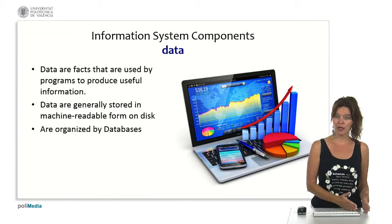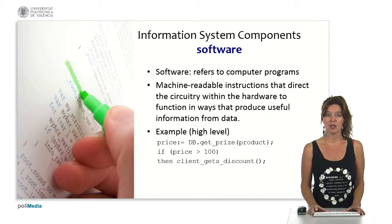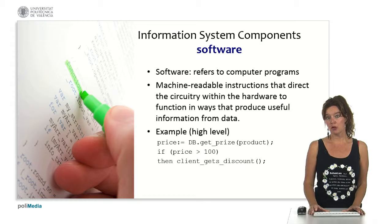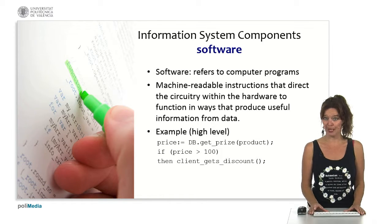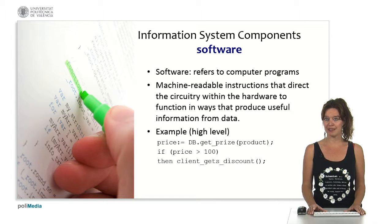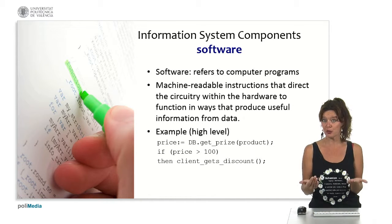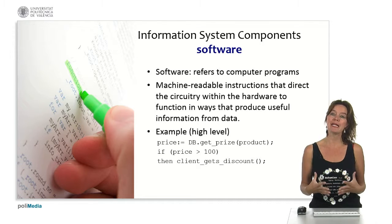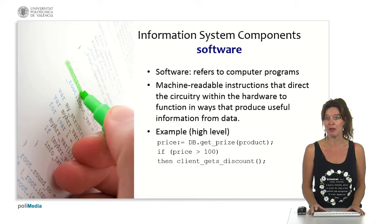The next component is software. Software, compared to hardware, is something you cannot see, cannot touch, and cannot break physically. These are the computer programs — machine-readable instructions that give instructions to the circuitry of the hardware in order to indicate what it should do to process the data and get useful information out of it.